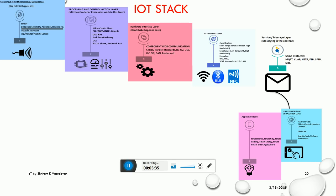To summarize: layer one — identify the sensor hardware; layer two — get the data from the sensor and connect it to the microcontroller; layers three and four — send the data to the cloud through appropriate hardware interfaces and connectivity protocols such as Wi-Fi; layer five — manage messaging using MQTT and similar protocols; layer six — present it beautifully for the user; and layer seven — build applications over it.